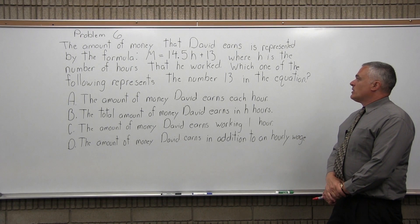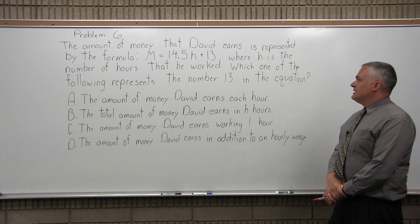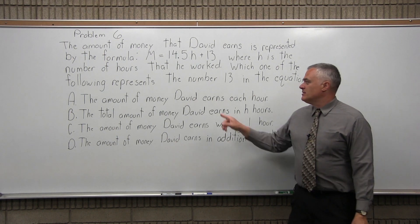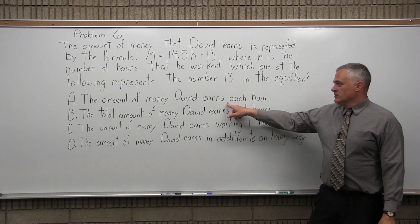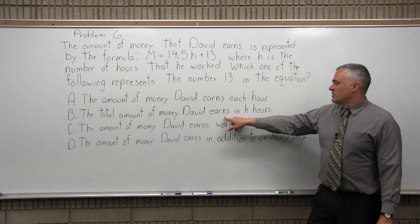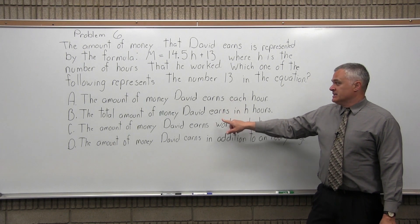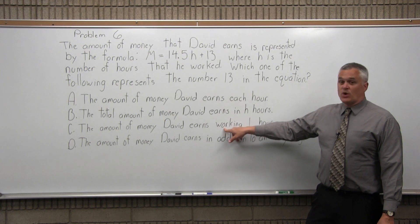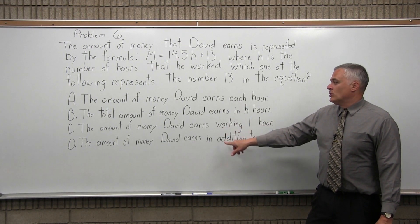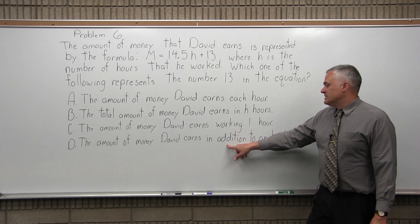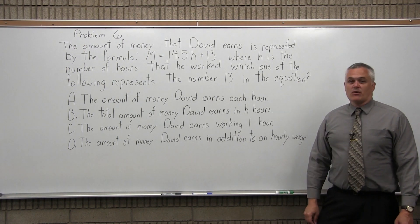Which one of the following represents the number 13 in the equation? Is it A, the amount of money David earns each hour, B, the total amount of money David earns in H hours, C, the amount of money David earns working one hour, or D, the amount of money David earns in addition to an hourly wage?